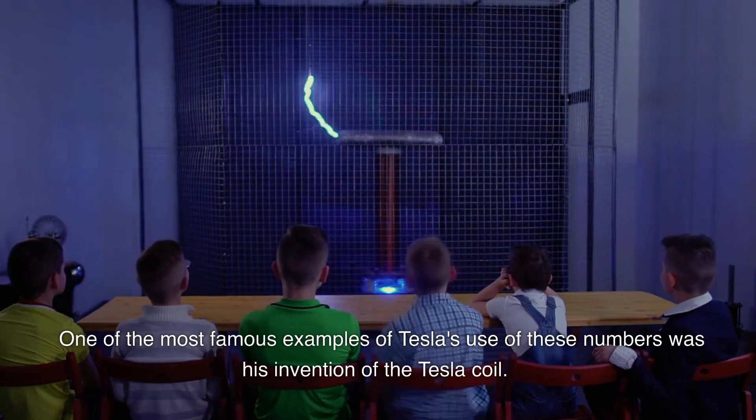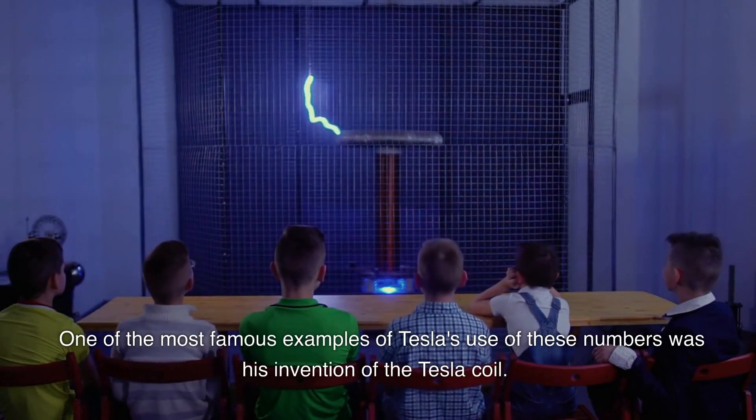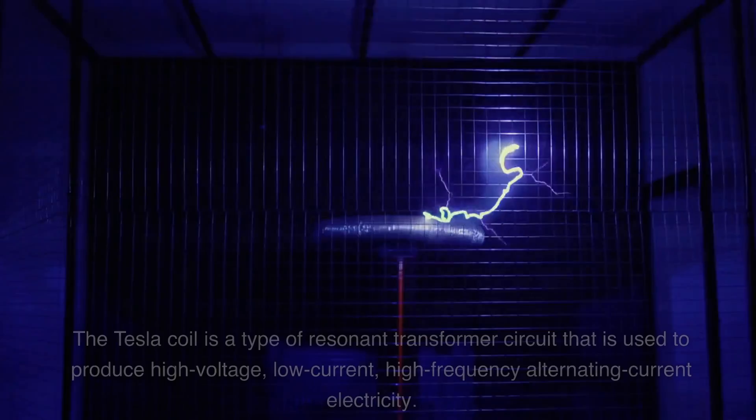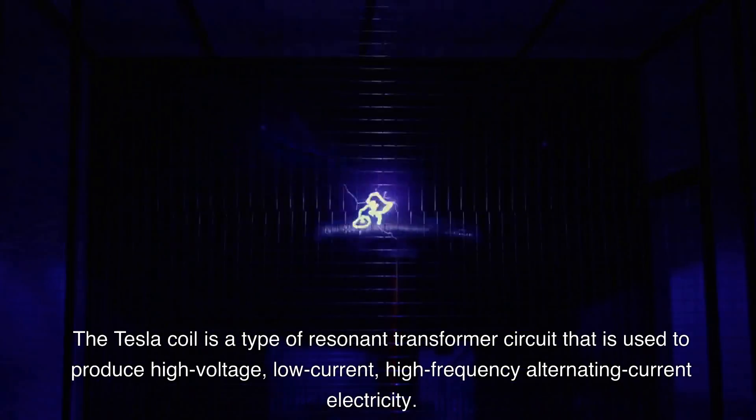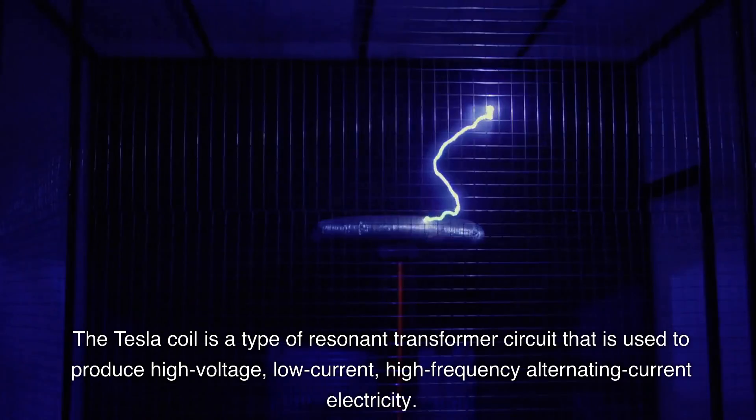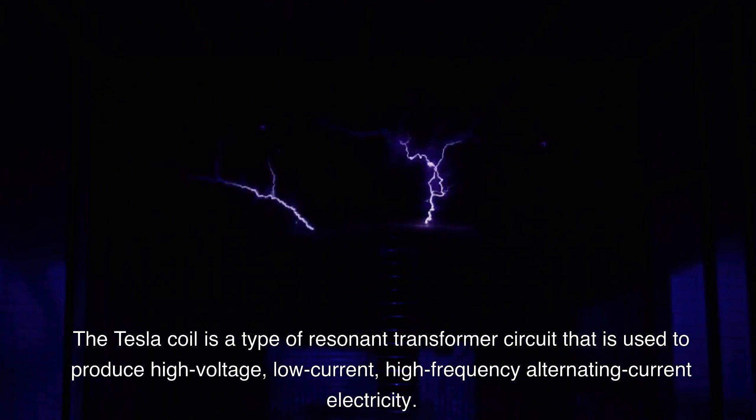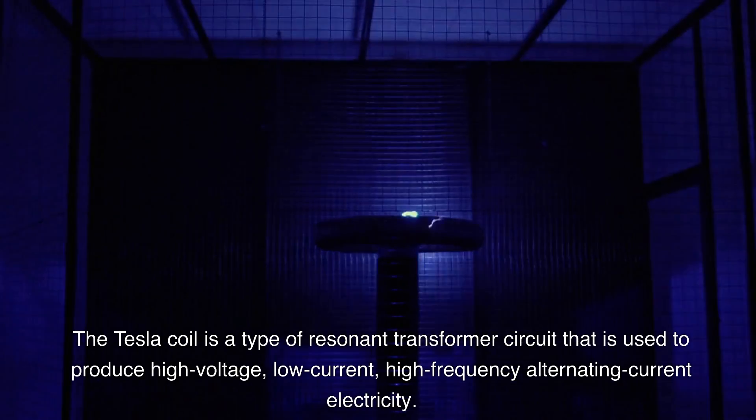One of the most famous examples of Tesla's use of these numbers was his invention of the Tesla coil. The Tesla coil is a type of resonant transformer circuit that is used to produce high voltage, low current, high frequency alternating current electricity.